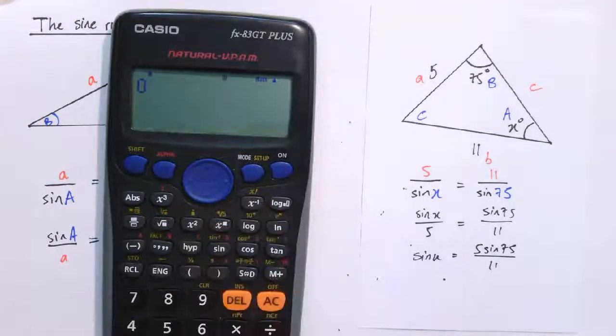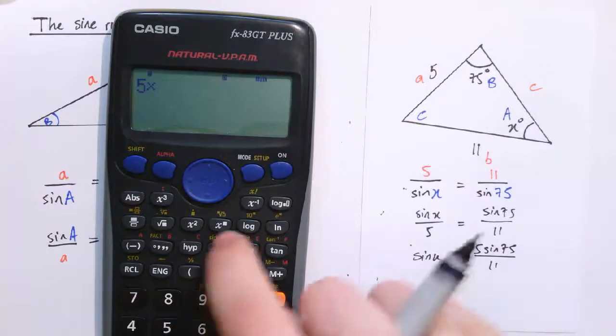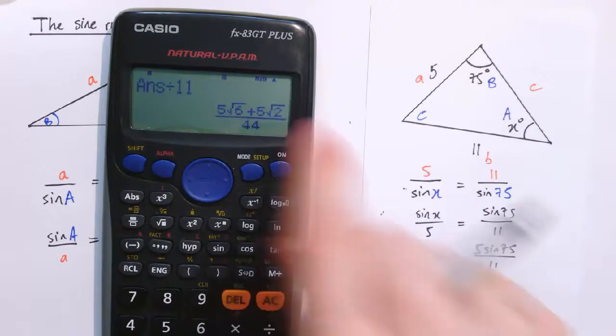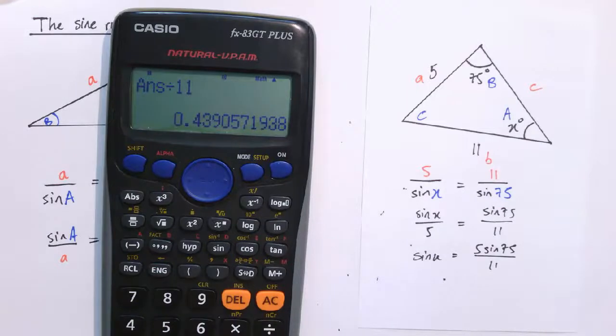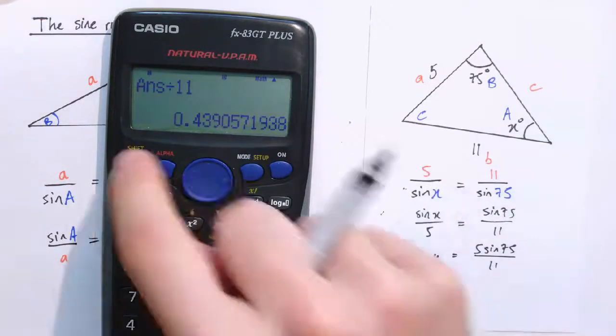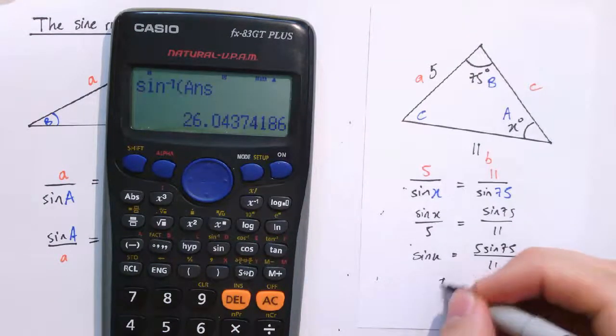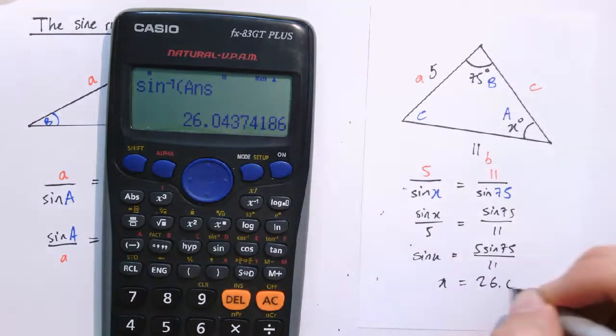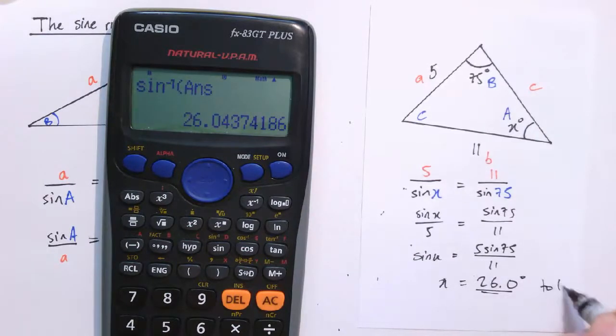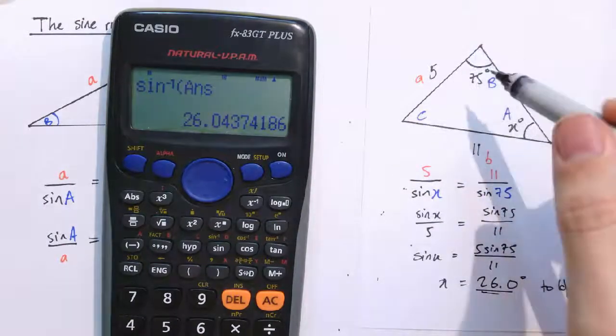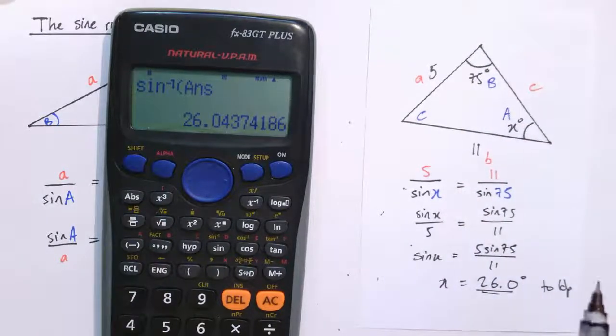So because I've got sine X on the bottom here, I want to solve for X. So it would be better to have this the other way up. So we can just flip it upside down. Sine X divided by 5 equals sine 75 over 11. We're taking the reciprocal of each side of the equation effectively. So sine X, multiplying both sides of the equation by 5, is 5 times sine 75 divided by 11. And if we get the calculator out, that's 5 times sine of 75, that's the numerator, divided by 11. And if we shift sign that to get back to X, that gives us X equals 26.0 degrees to one decimal place. As you can see, this triangle isn't drawn to scale.